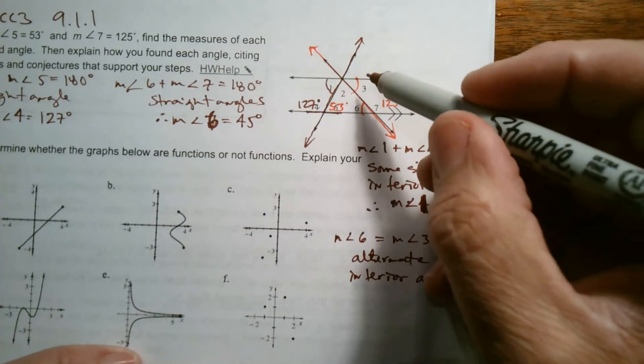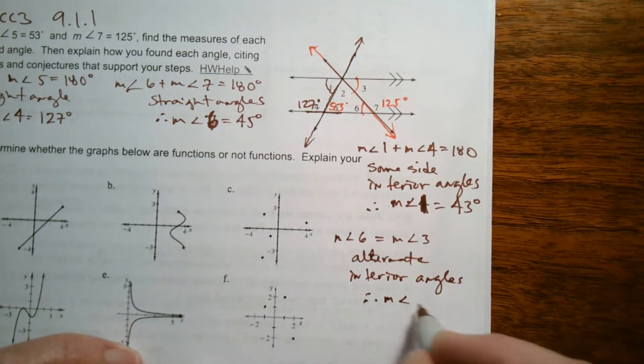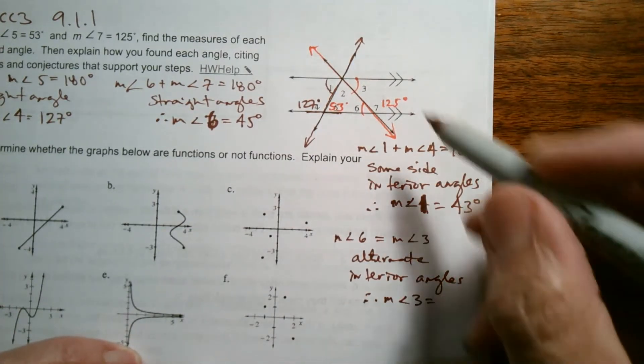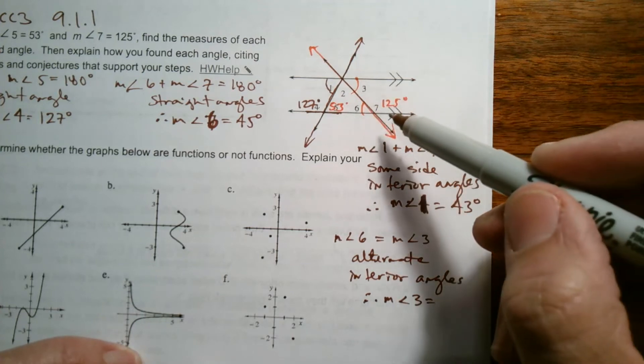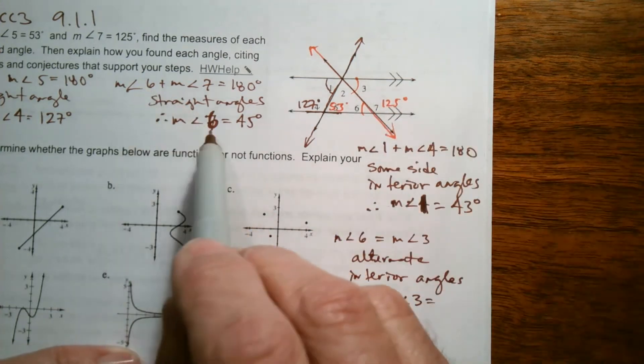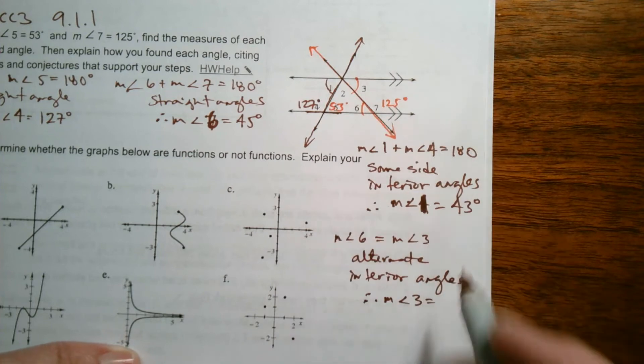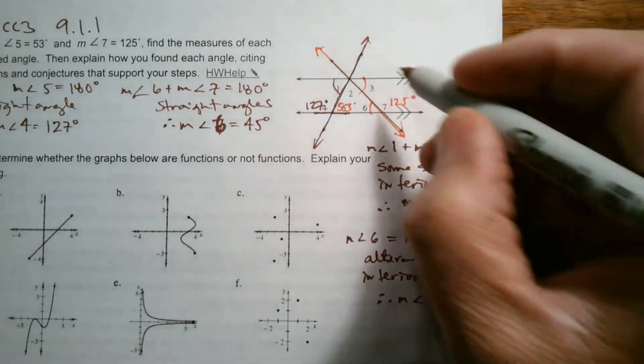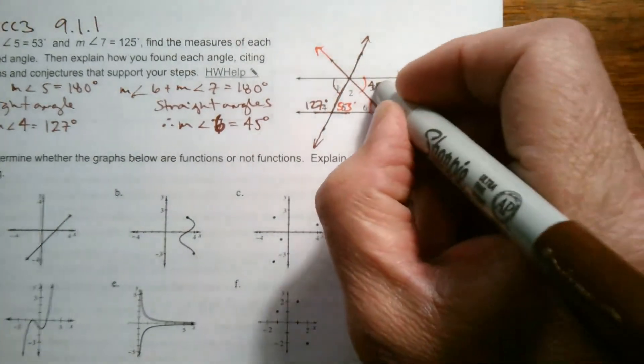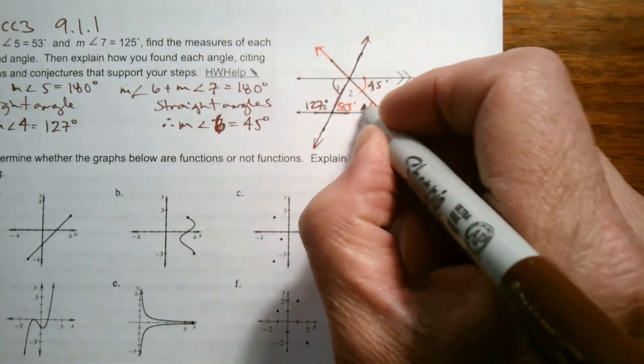Alternate interior angles are equal, and so, therefore, we would say that measure of angle 3 is equal to, if 6, I found 6 earlier, 6 was 45 degrees, so, therefore, 3 is also 45 degrees. That one's 45 degrees.